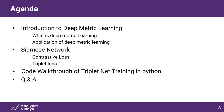Next, we will talk about applications of deep metric learning, discussing how it can be used in different areas such as image retrieval and face recognition systems. Moving on, we will discuss the Siamese network and its different loss functions, such as contrastive loss and triplet loss. We will dive into how all these loss functions work and how they can be used to improve the performance of the network. Lastly, we will have a code walkthrough of triplet network training in Python, going through the step-by-step implementation.